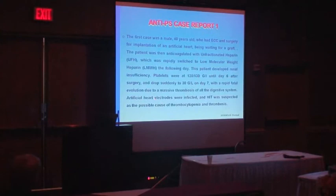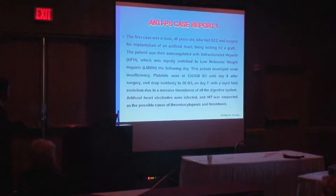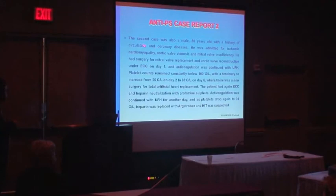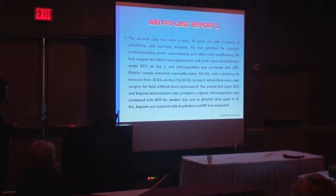Heart electrodes were infected and the patient also had antibiotic therapy, but HIT was suspected because of this rapid fall on D7. This first case was from Professor Ludovic Drouet in Paris. The second case, from Professor Simon Panzer in Vienna, was a 50-year-old male with a history of circulatory and coronary disease, admitted for ischemic cardiomyopathy, aortic valve stenosis, and mitral valve insufficiency.